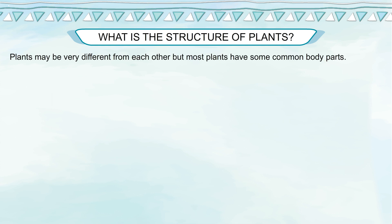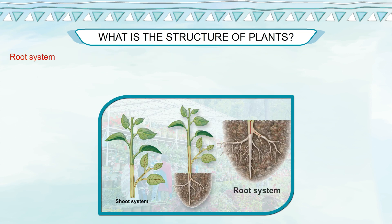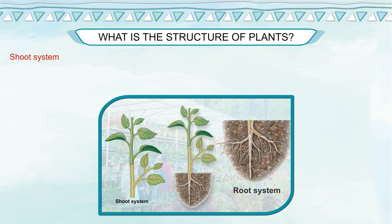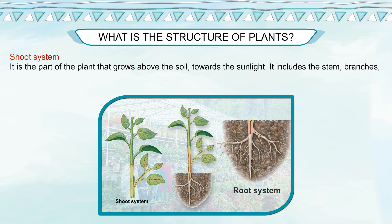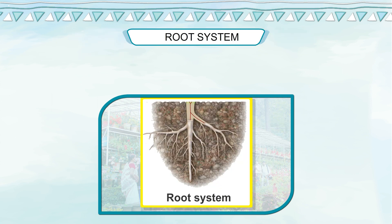What is the structure of plants? Plants may be very different from each other, but most plants have some common body parts. A typical plant body has the root system and the shoot system. The root system is the part of the plant that grows into the soil away from sunlight. The shoot system is the part that grows above the soil towards the sunlight. It includes the stem, branches, leaves, flowers and fruit.